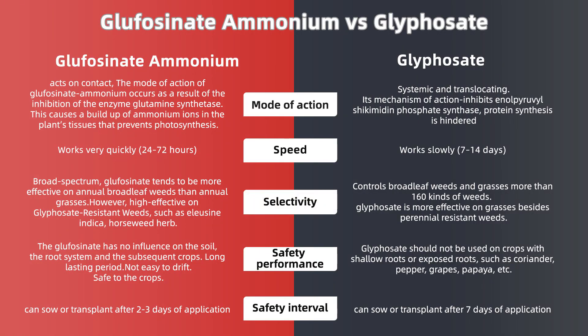Glufosinate ammonium allows sowing or transplanting after 2–3 days of application. Glyphosate also allows sowing or transplanting after 2–3 days of application.